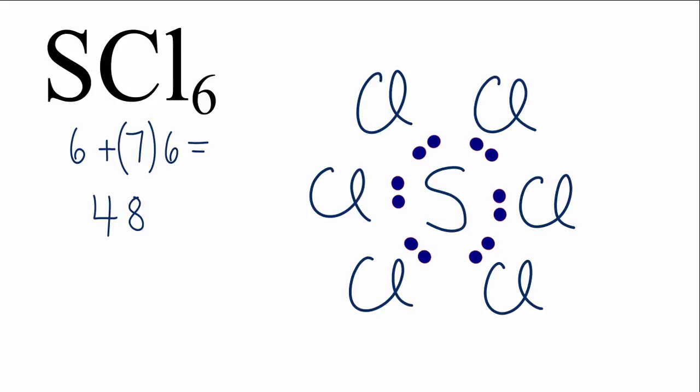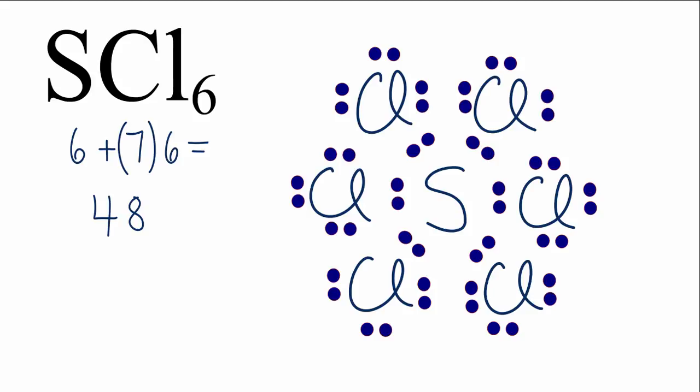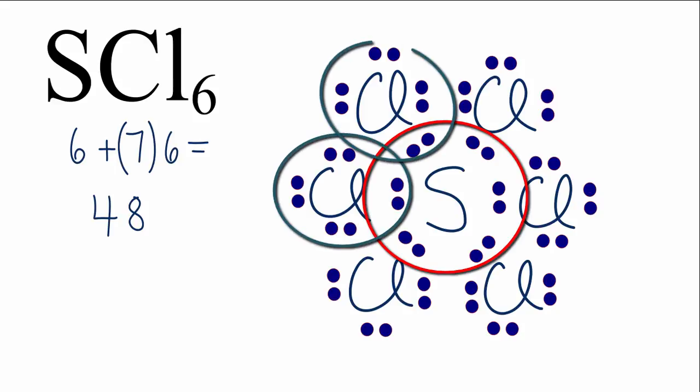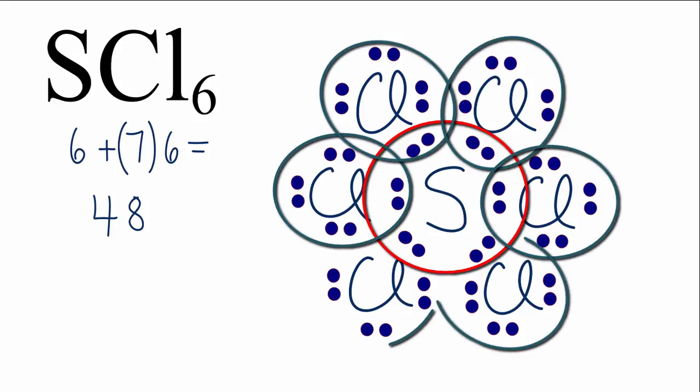We've used 12 valence electrons. Let's put valence electrons around the chlorine atoms to complete the octet for chlorine. And it's a little bit awkward, but we can see sulfur has the 12 valence electrons. And each one of those chlorine atoms has 8 valence electrons. We've used all 48 valence electrons.